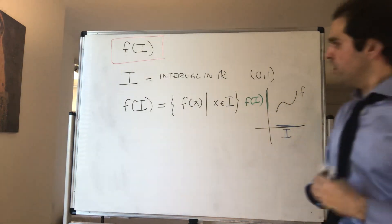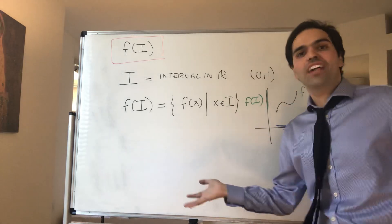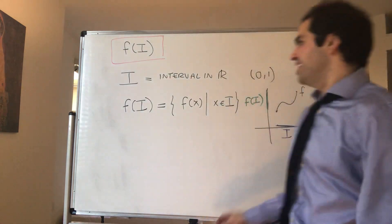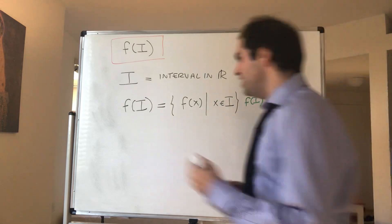And now you have to understand, in general, f of I could be crazy. It could be a fractal set, even a Cantor set, and other crazy things. However, what I want to show now is something very neat.